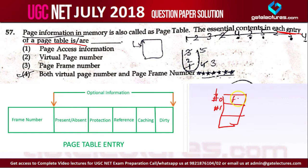So if we have entries like this, it means that page number 0 is found in frame number 3, page number 1 is not in memory, and page number 2 is found in frame number 2. So frame number is the essential entry and all other entries are optional.